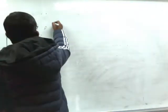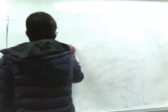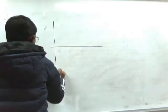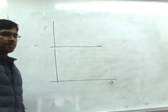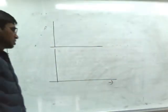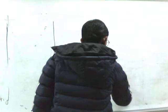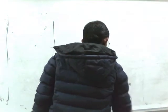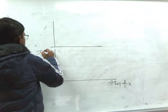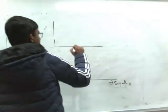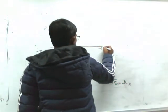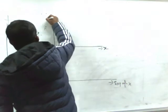Now we will draw the offer curve. Here is the technique of drawing the offer curve from the production possibilities curve. In the left diagram, the horizontal axis measures the volume of X and the vertical axis measures the volume of Y. In the right diagram, the horizontal axis measures exports of X and the vertical axis measures imports of Y.